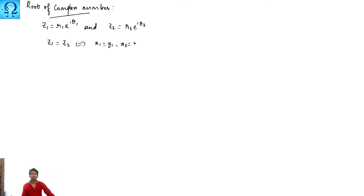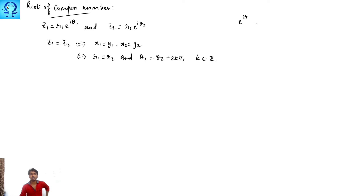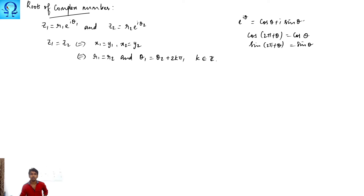z1 and z2 are the same if and only if the corresponding real part and imaginary part are the same — this is true in rectangular coordinates. For the polar coordinate case, r1 and r2 must be the same, and theta 1 must equal theta 2 plus 2k pi, where k is any integer. This is because e to the power i*theta equals cos(theta) plus i*sin(theta), and both cosine and sine are periodic with period 2 pi.